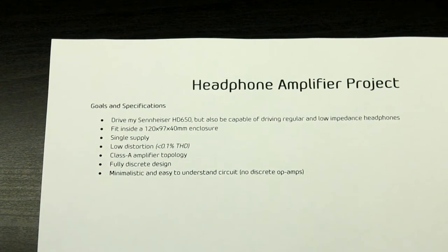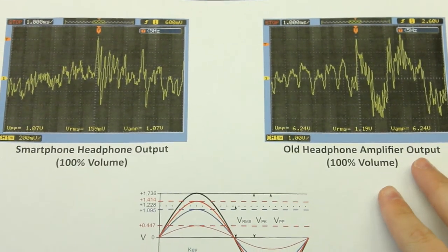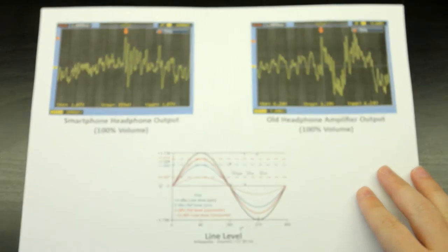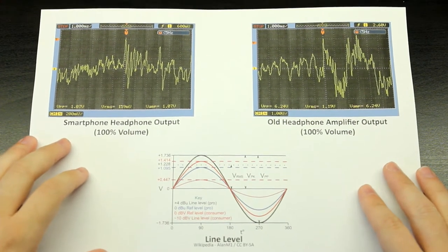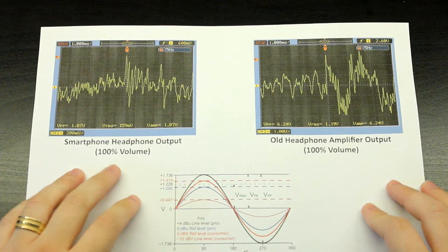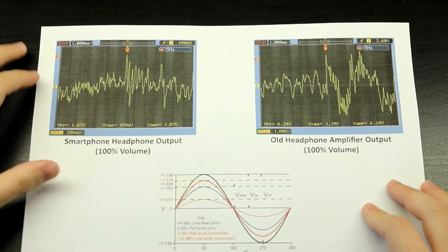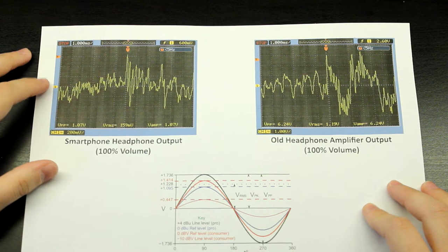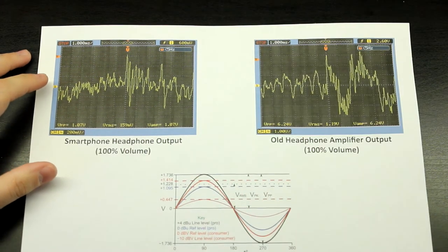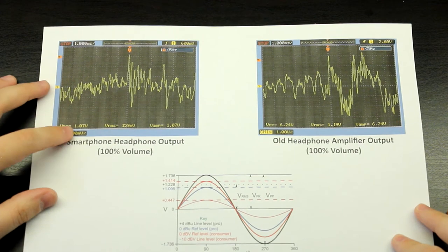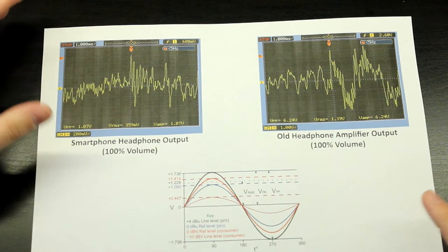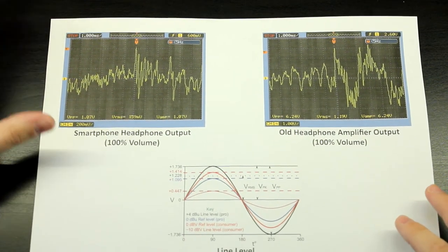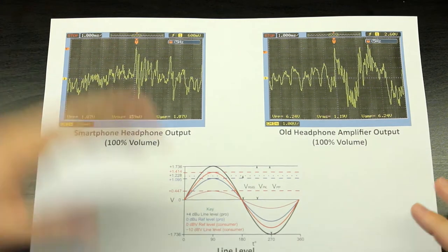One of the main things we need to be concerned about is this. I took some snapshots with my oscilloscope of the headphone output of my mobile phone — just a Galaxy Note 9. It outputs around one volt peak to peak. With that in mind, we're going to use that as our input voltage for all the calculations we'll do throughout the video.